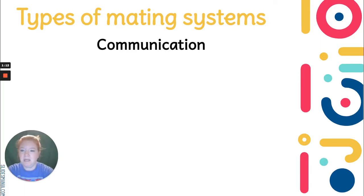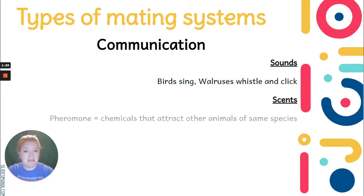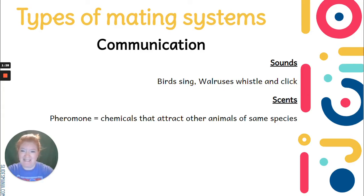So, types of mating systems. First, there's communication. There are sounds — like birds sing, walruses whistle and click. There are scents — a big word here is pheromone. A pheromone is a chemical, a smell, a scent that attracts other animals of the same species.